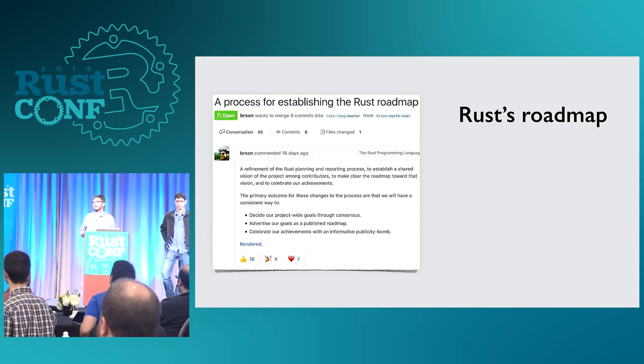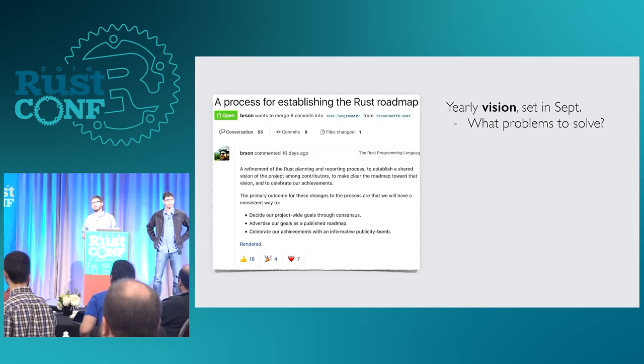This is the new Rust roadmap process. The heart of it is the idea that every year we're going to come together as a community and try to set out a vision for the next year of Rust. The way this should work: we spend some period of time gathering a lot of data — doing things like the Rust survey, talking to production users, talking to people as we're trying to teach them Rust, at conferences — anywhere we can encounter people using or trying to use Rust.